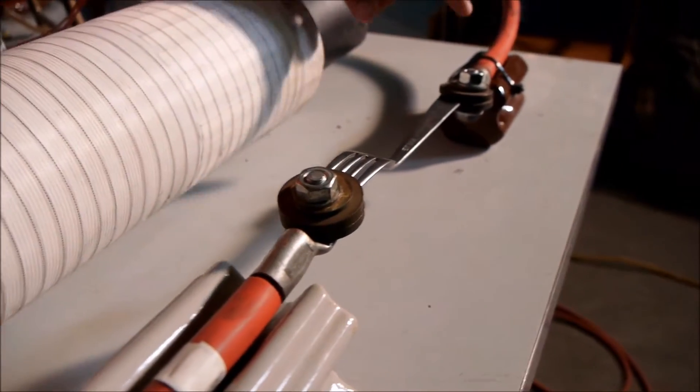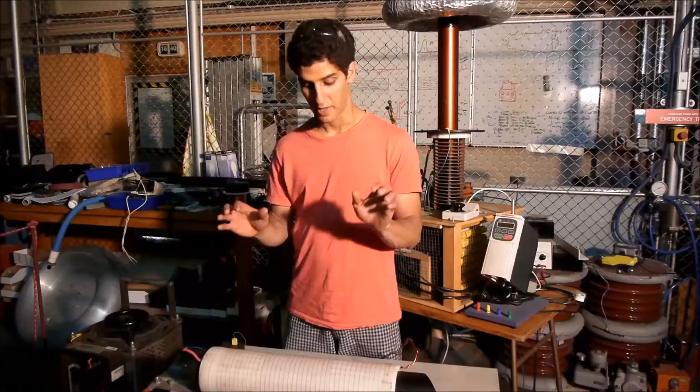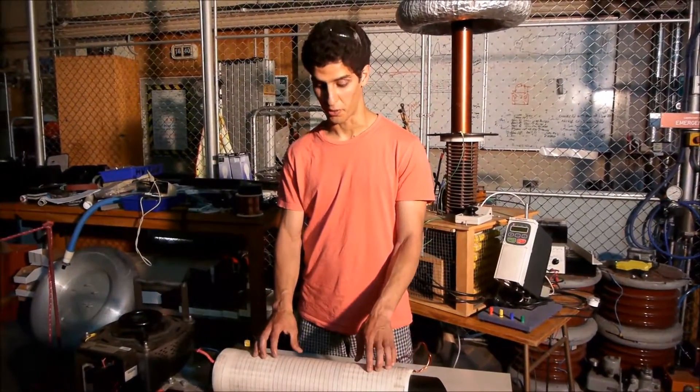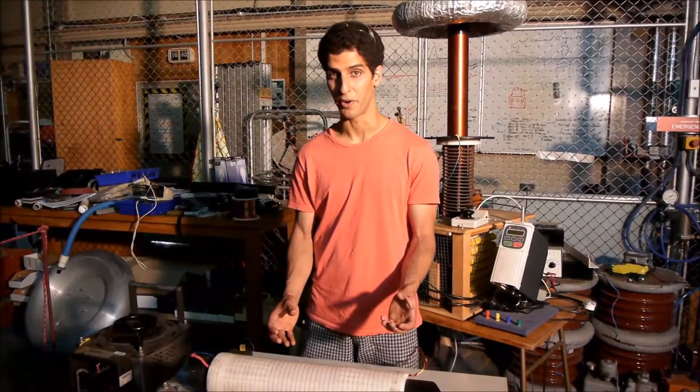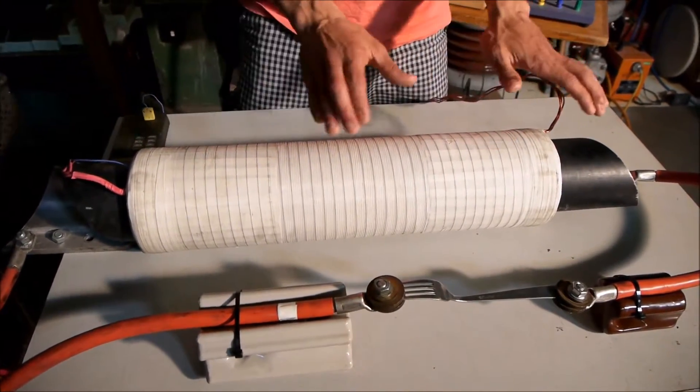Now we're going to use this current and we're going to drive it through this poor little fork here. Now the amount of current induced in the secondary coil is determined by the ratio of the number of turns on the primary coil to the number of turns on the secondary coil.